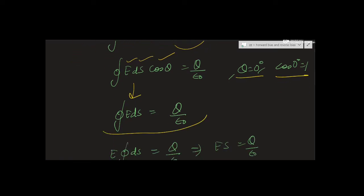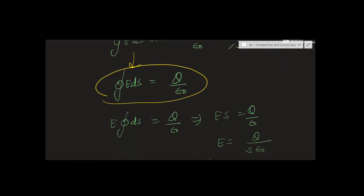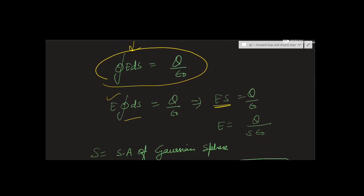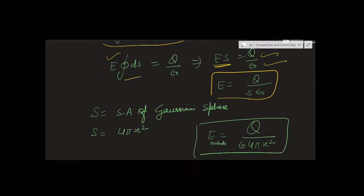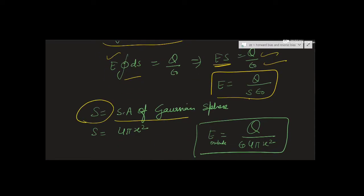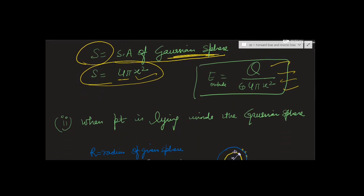Integrating, E·S = q/ε₀, so E = q/(ε₀·S). Here S is the surface area of the Gaussian sphere: S = 4πx². Substituting gives us the electric field outside: E = q/(4πε₀x²).